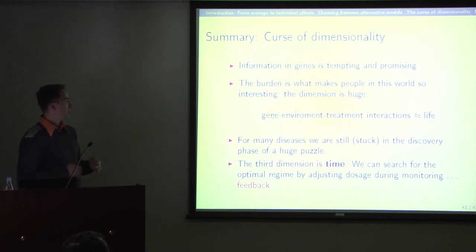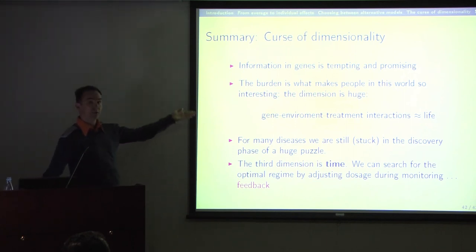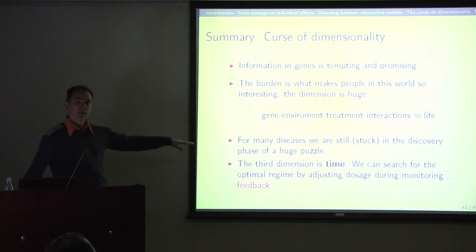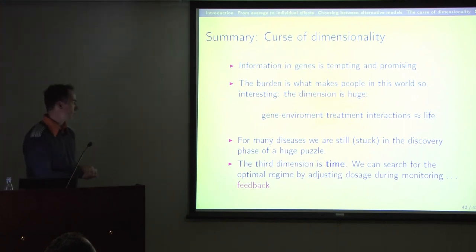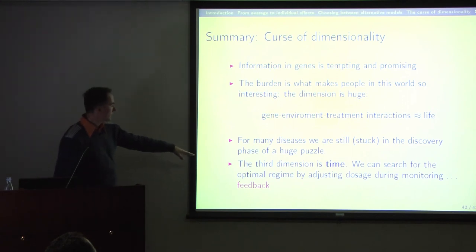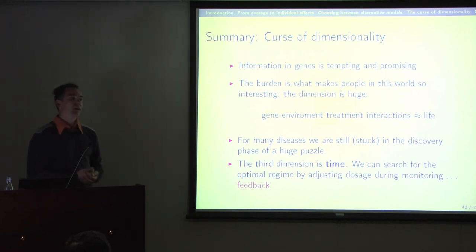Summing up the curse of dimensionality: we need to look at genes and use genomic information, producing more and more data in huge amounts. We face a very big dimensional space involving gene-environment and treatment interactions, with time as a third dimension making everything even more complicated. One thing I didn't mention, relevant to individualized treatment and connecting back to my opening anecdote about Professor James Robbins: he's famous for developing optimized treatment regimes, and one problem he faces is feedback — when you change the dose, the patient reacts in a certain way. Thank you for your attention.